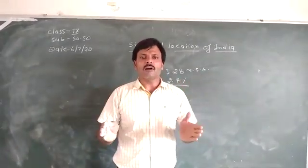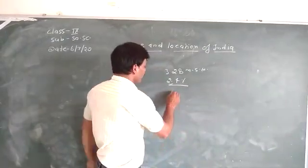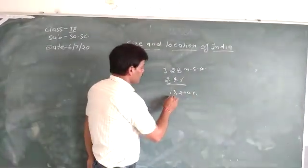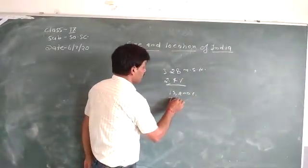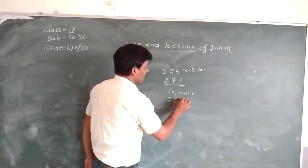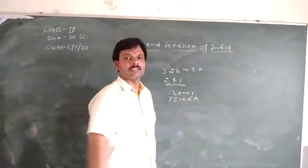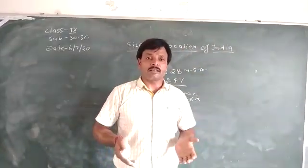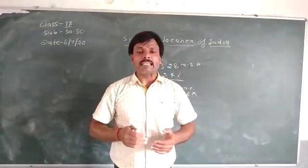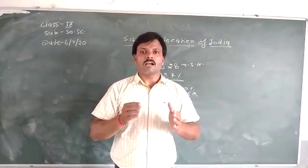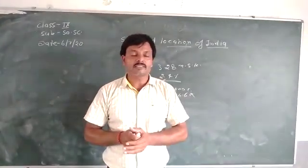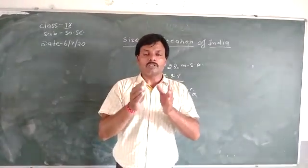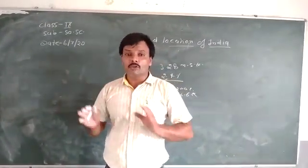The land boundary of India is 15,200 kilometers and the coastal line is 7,516.6 kilometers. The length of our country from north to south is 3,240 kilometers and from west to east is 2,933 kilometers.